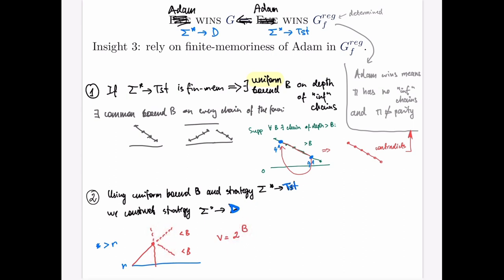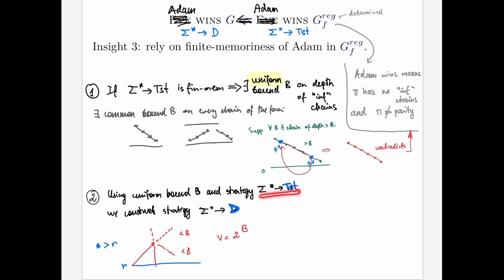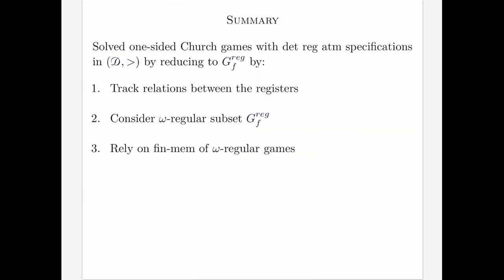To conclude, these two steps allow us to construct a data strategy for Adam given a Boolean strategy for Adam, and therefore we prove this direction. The summary is: we solved one-sided Church games with deterministic automata specifications in the domain of natural numbers by reducing to omega-regular games, and the proof relies on three insights which allow reduction of the data game to a feasibility game, considering an omega-regular subset tracking only infinite chains, and relying on finite memoriness of omega-regular games.